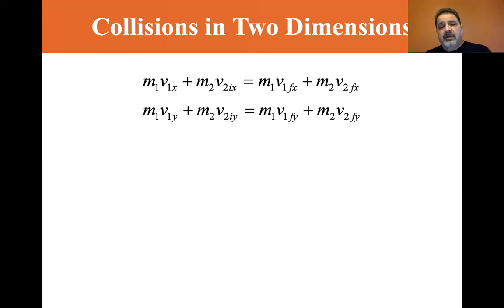To simplify it, we're going to keep it on a plane. Whereas in collisions in one dimension, it was all along the X axis, now we have the X and Y axis. We have M1·V1X initial plus M2·V2 initial X equals M1·V1 final X plus M2·V2 final X. In the Y direction: M1·V1Y plus M2·V2 initial Y equals M1·V1 final Y plus M2·V2 final Y. So those are the equations that we set up.